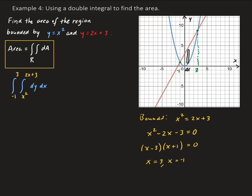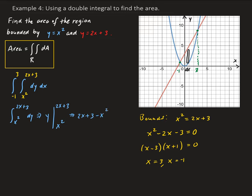Let's first evaluate the inner integral of dy from x squared to 2x plus 3. Integrating with respect to y gives us y, evaluated from x squared to 2x plus 3. Plugging in, that gives us 2x plus 3 minus x squared.